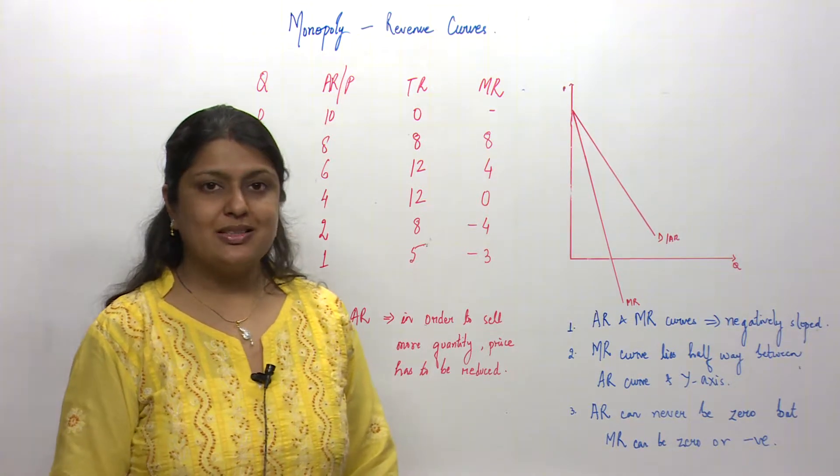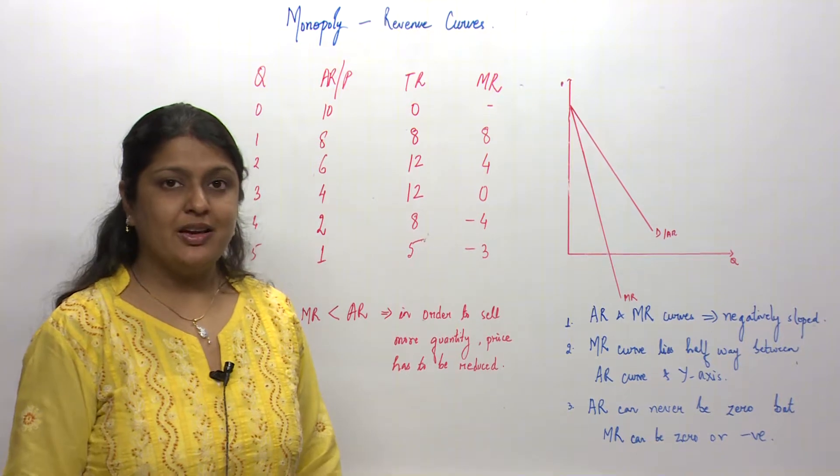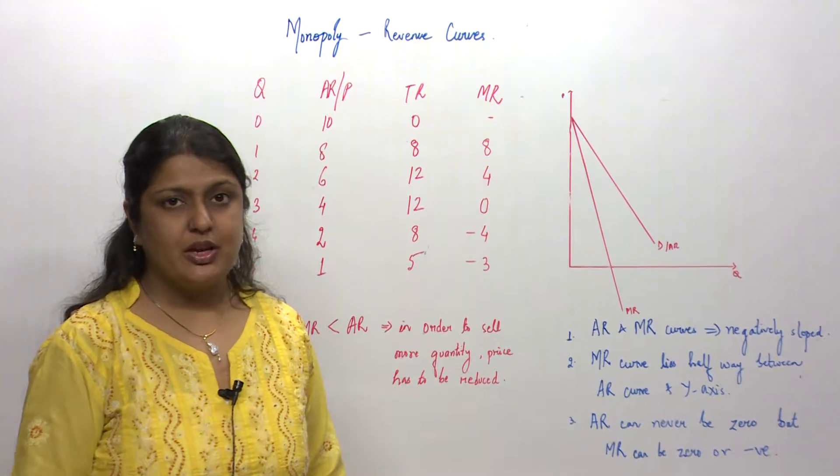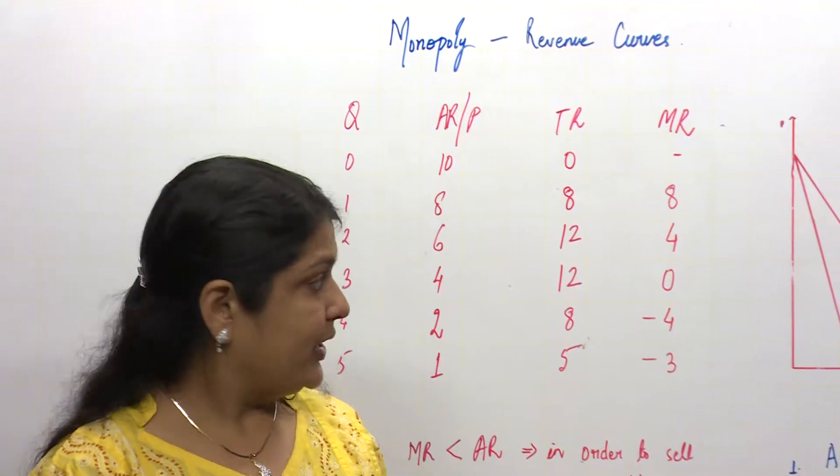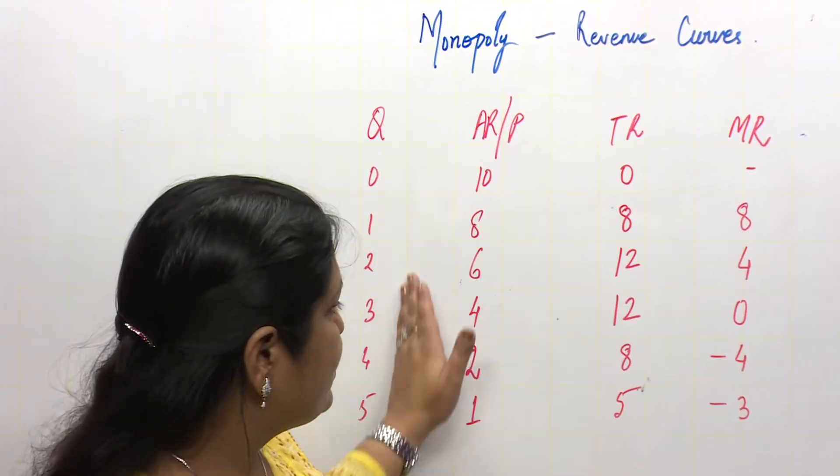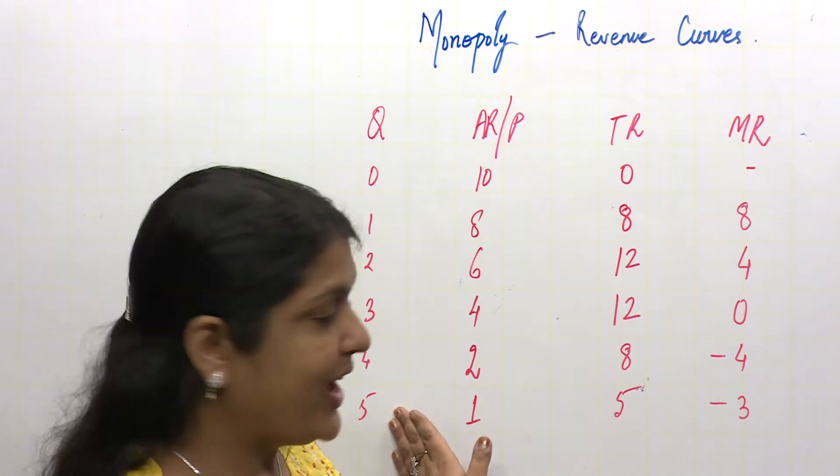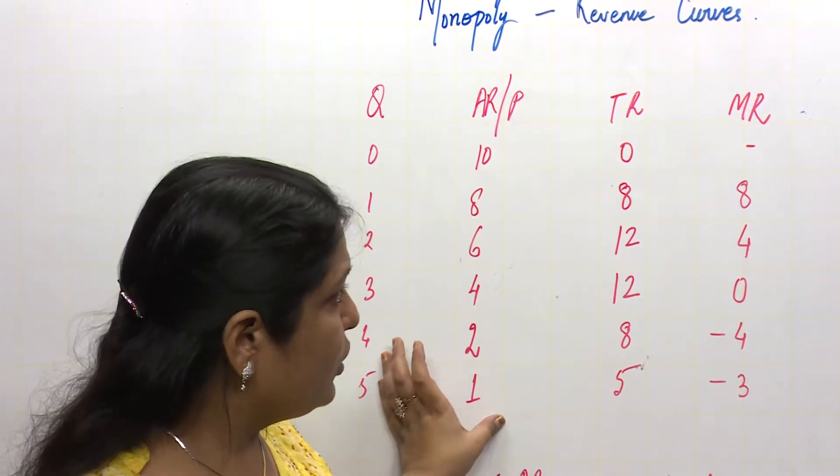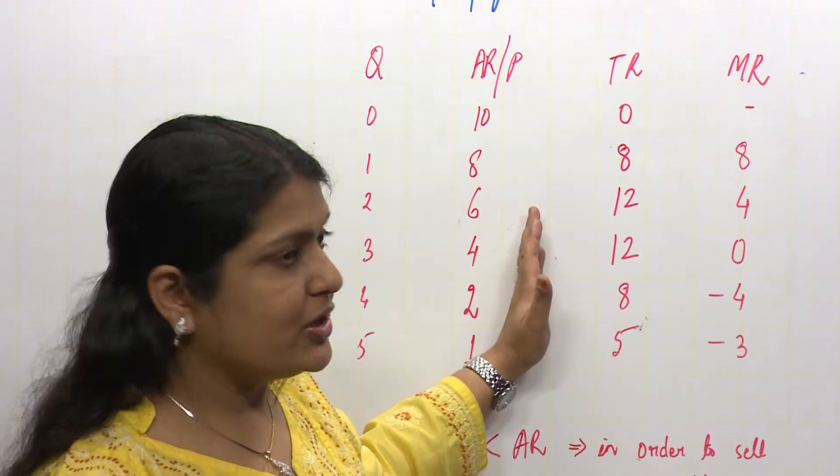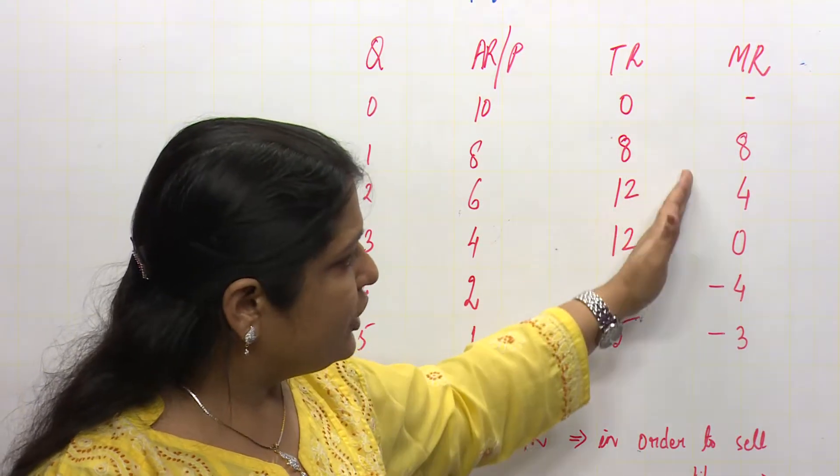The monopolist, who is a single seller in the market, if he has to sell more quantities, he has to reduce his price. If a monopolist has to sell more quantities, the average revenue or price has to be reduced. So if we multiply, then we have total revenue and marginal revenue.